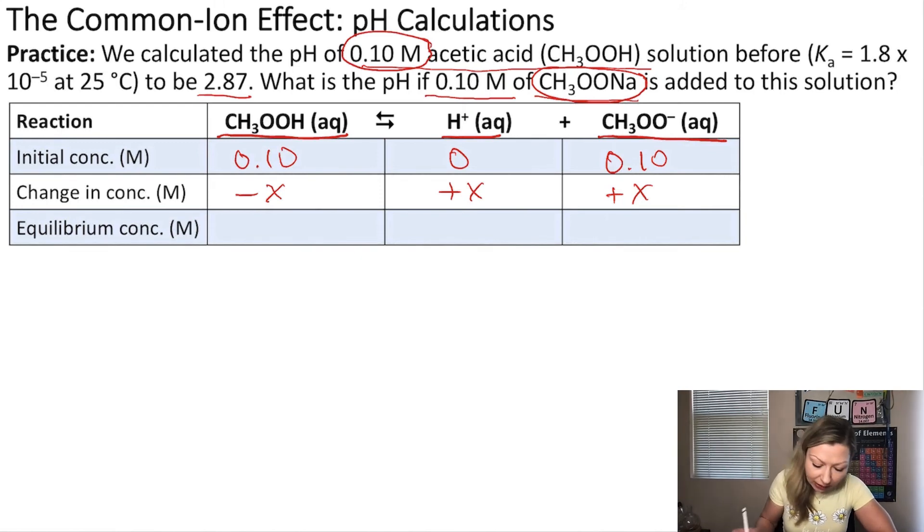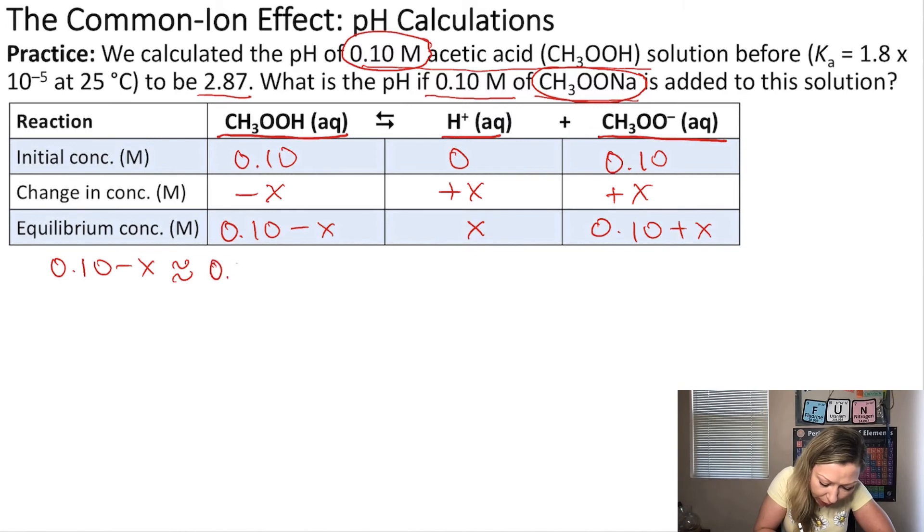Now, what are the equilibrium concentrations? 0.10 minus X, X, and 0.10 plus X. Now, I want to make an approximation. I think that actually X is such a tiny number that I can disregard it compared to 0.10 mol per liter.